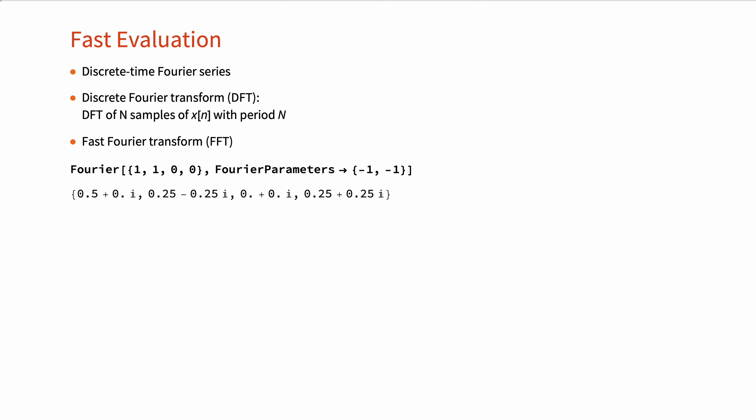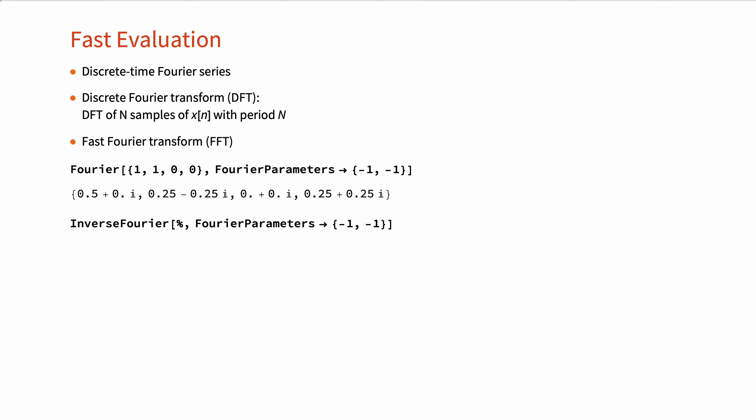For example, here are the Fourier series coefficients of the square wave from our first example. The option FourierParameters set to {-1, -1} is used to match the settings of the Fourier function in the Wolfram Language with the discrete time Fourier series analysis formula defined earlier. The function InverseFourier performs the inverse operation of calculating the time domain sequence from the list of Fourier coefficients.